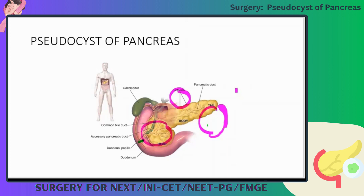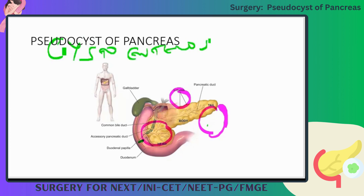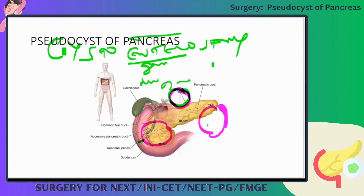Is it a temporary drainage? No, it will be permanent drainage. After some time the pseudocyst will heal on itself and become normal due to pressure variations. So it drains into the bowel — a cystoenterostomy, meaning it drains into any part of the bowel: either the stomach, duodenum, or jejunum. We just call it a cystoenterostomy — it should be drained into the bowel.